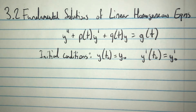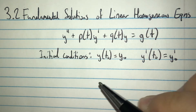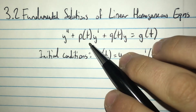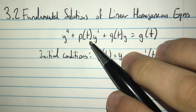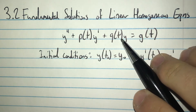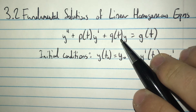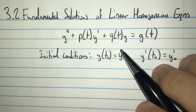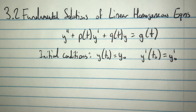The main goal of this section is finding the interval that the solution is on. We have to find the interval that p of t is continuous on and the interval that q of t is continuous on, so we can find the interval that the solution is on.